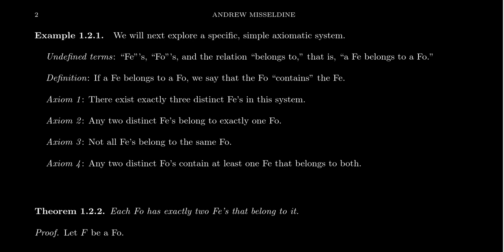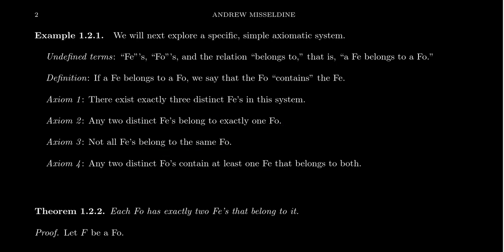Let me state these four axioms — statements about fee, foe, and belongs to. Axiom one: there exist exactly three distinct fees in the system. Axiom two: two distinct fees belong to exactly one foe. Axiom three: not all fees belong to the same foe. Axiom four: any two distinct foes contain at least one fee that belongs to both. When you read these out of context it can be confusing, but this toy example is intended so we don't have context for why these things are true — we're just accepting that they are. Take it on faith.